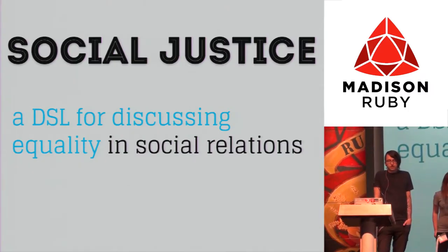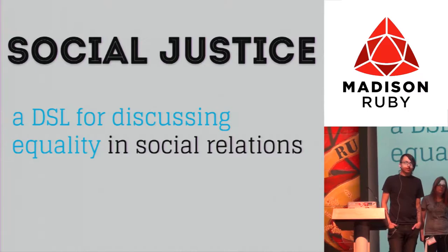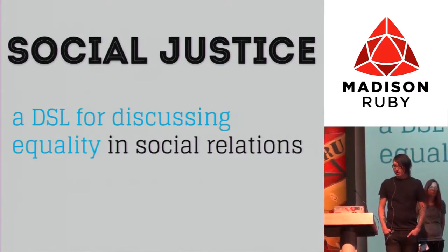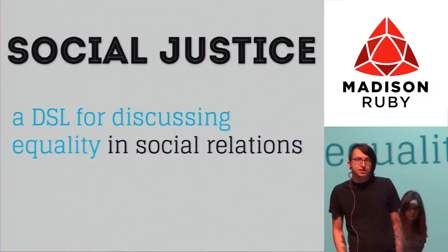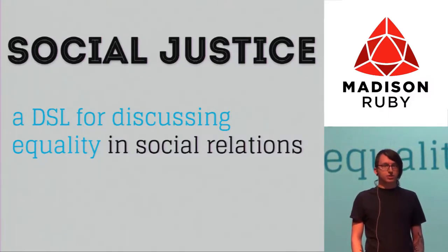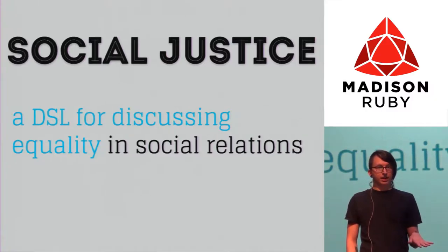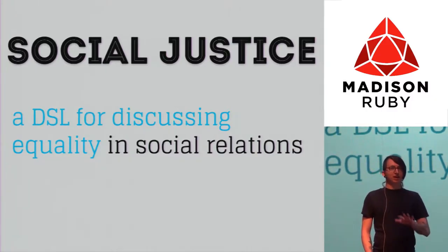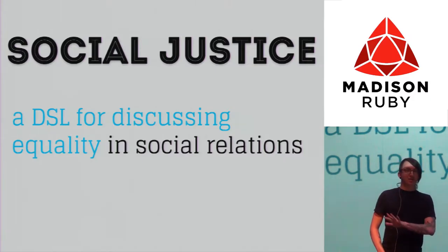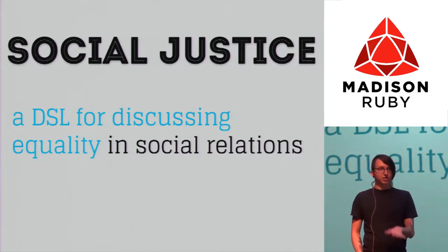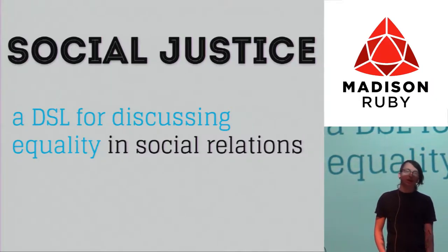There's a term called social justice — essentially a DSL for discussing equality in social relations. One thing to emphasize: this is not necessarily about politics. Social justice as a term actually originates from Thomas Aquinas, and it used to be a very conservative, religious, we-need-to-help-those-who-are-less-fortunate kind of thing. This is about being humans to other humans, regardless of whether they vote Republican or not. This is a bigger topic than petty political squabbling. We are all people and we should be treating each other as people — and it's easy to forget sometimes because we deal with computers all the time.